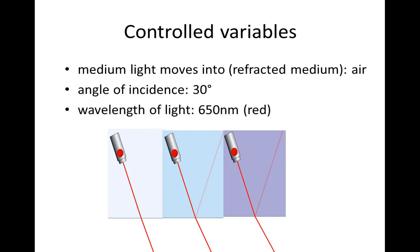These could be anything we choose as long as we're consistent throughout. But in this particular investigation, the light is always going to move into air, the angle of incidence is always going to be 30 degrees, and I'm going to choose red light of 650 nanometers.